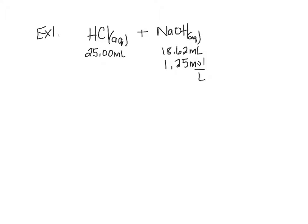What is the concentration of hydrochloric acid if we have 25 mL of it and we add it to sodium hydroxide? We have 18.62 milliliters and 1.25 mol per liter. You want to put the information that you do know underneath your reactants.